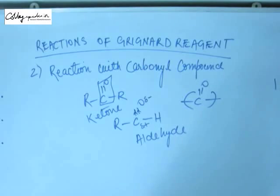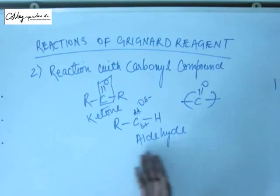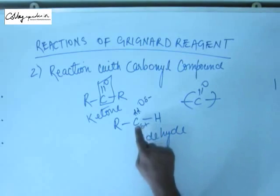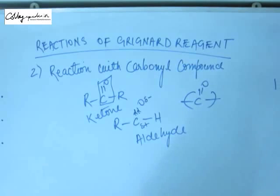Remember the problem of Grignard reagent: in Grignard reagent you have a negative charge on carbon, and that is a problem because carbon cannot hold a negative charge — it is not electronegative and not a large element. So it has to discharge its charge. When it encounters a carbonyl group, it first searches for active hydrogen, but in aldehydes and ketones there is no active hydrogen, since hydrogen is attached to carbon, not to an electronegative atom. So no acid-base reaction is possible, and the Grignard reagent must dislodge its electrons another way.